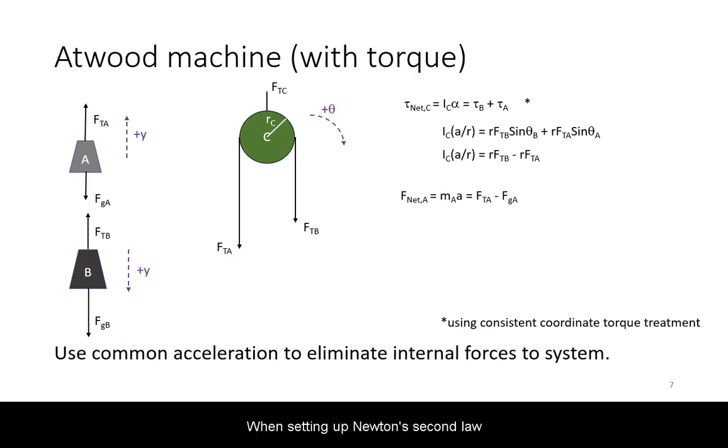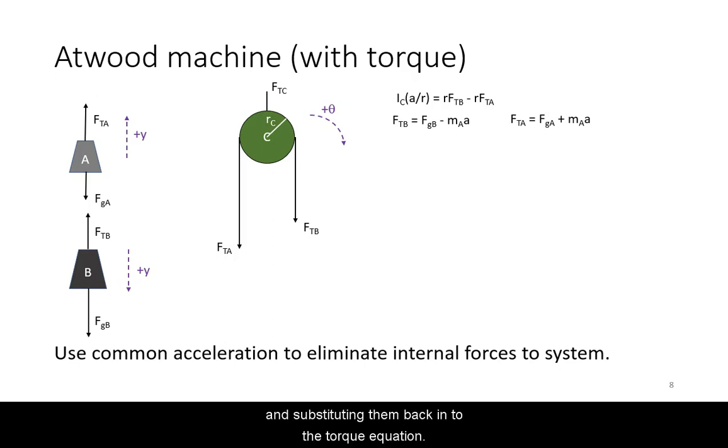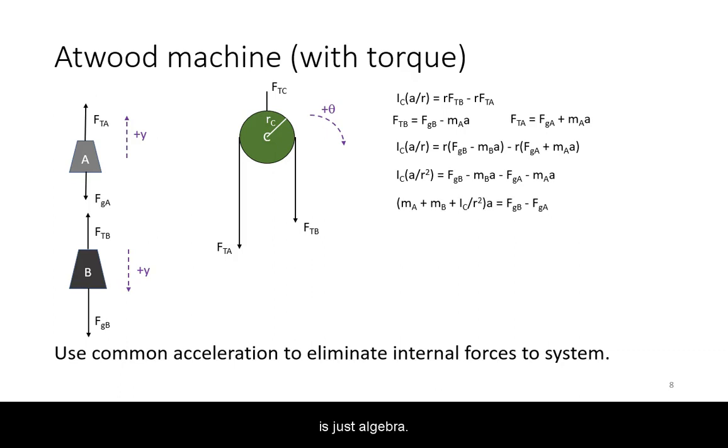When setting up Newton's second law for the hanging masses, we will aim to eliminate the internal forces to the system by solving for the tension and substituting them back to the torque equation. The rest is just algebra.